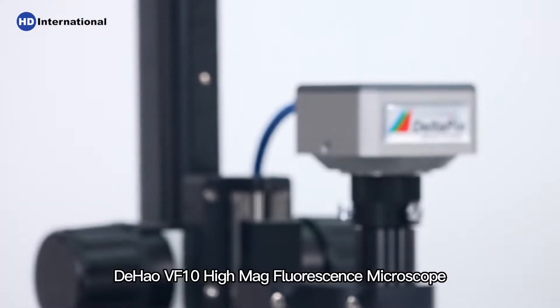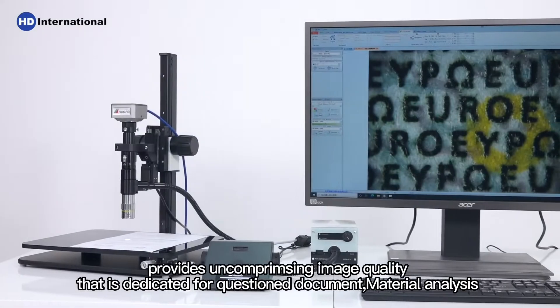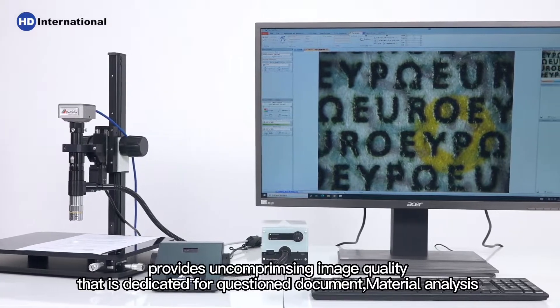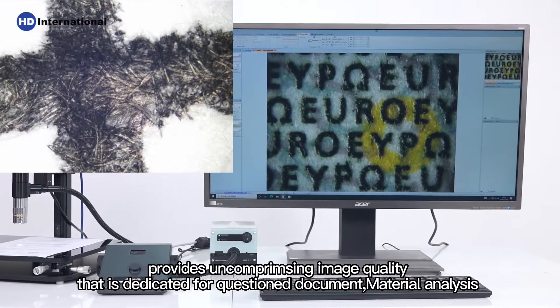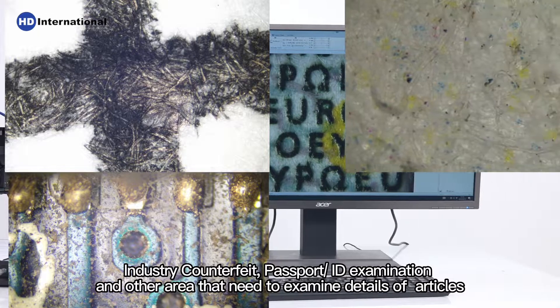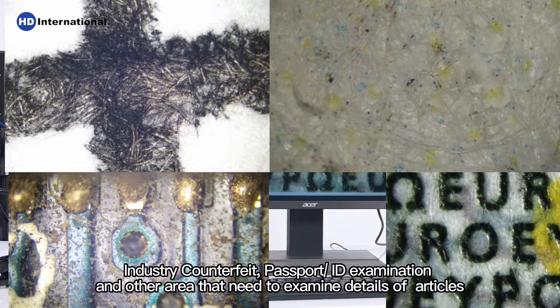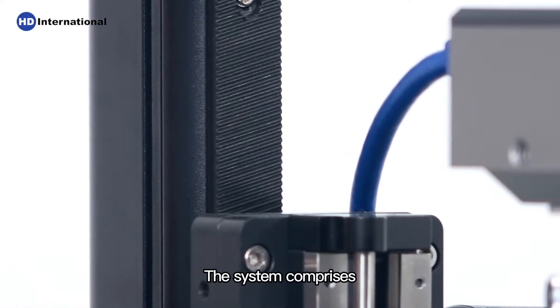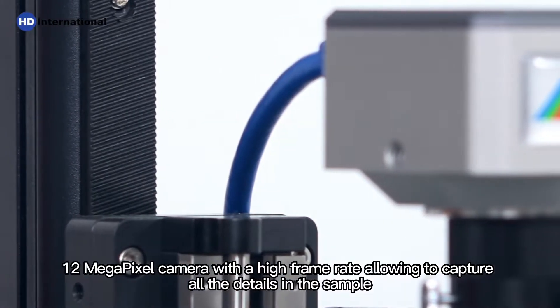The HAL VF10 High Mag Fluorescence Microscope provides uncompromising image quality dedicated for questioned document examination, material analysis, industry counterfeit detection, passport or ID card examination, and other areas that need to examine details of articles. The system comprises a 12-megapixel camera.